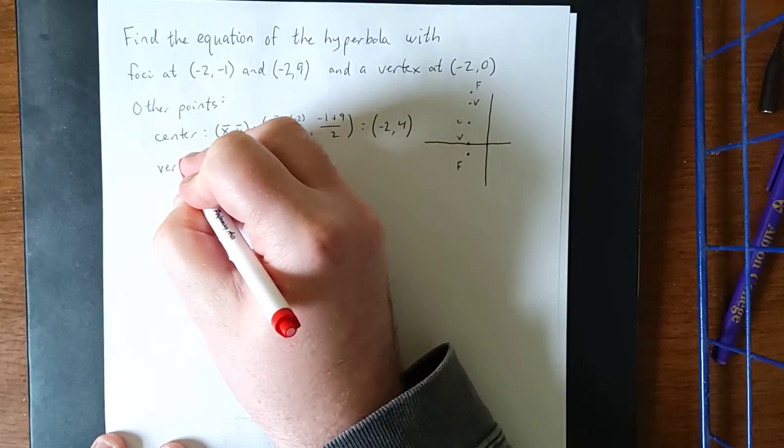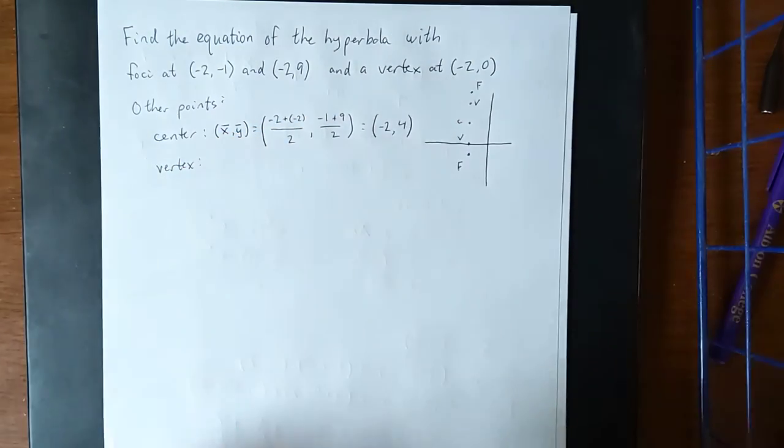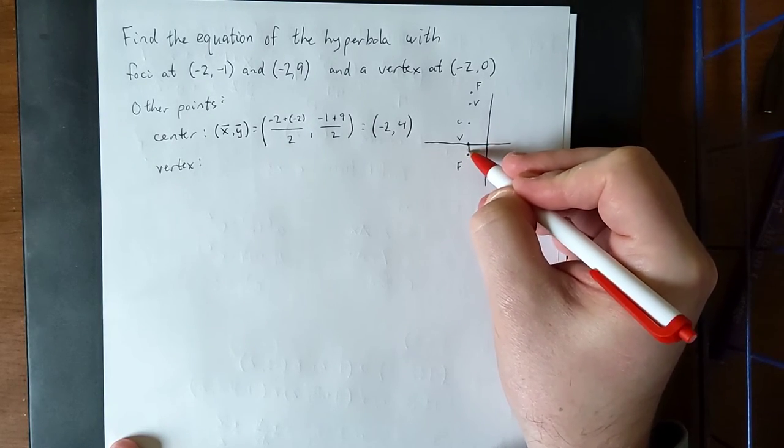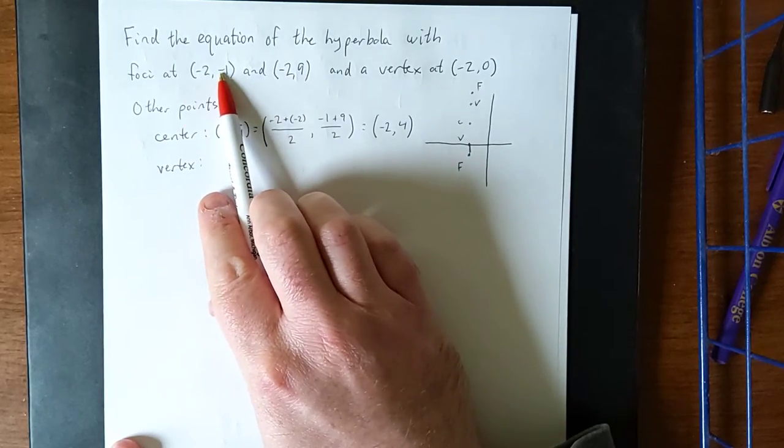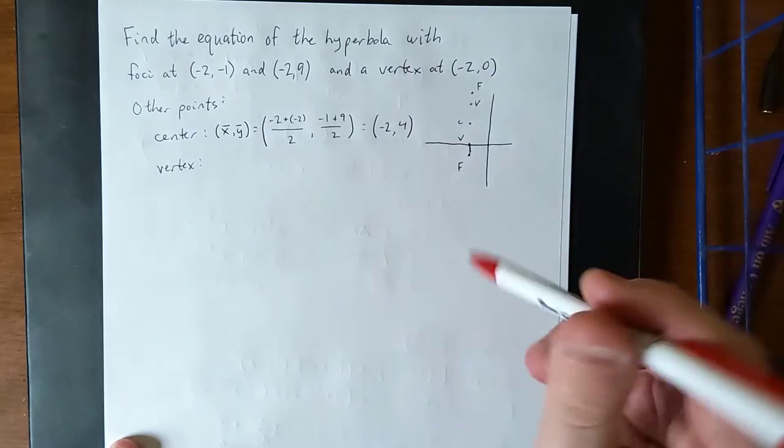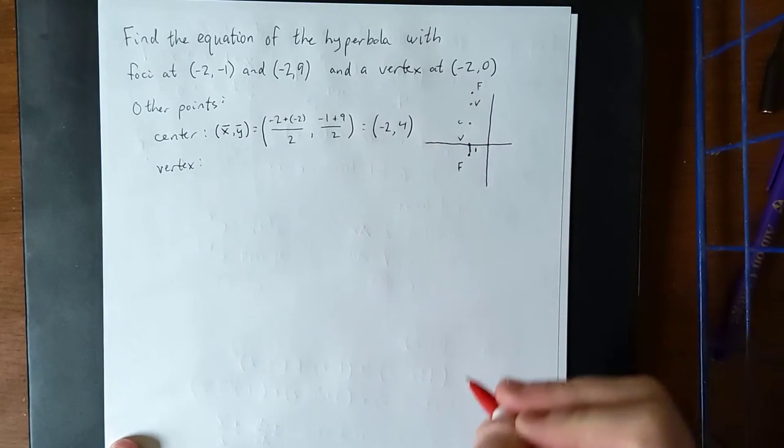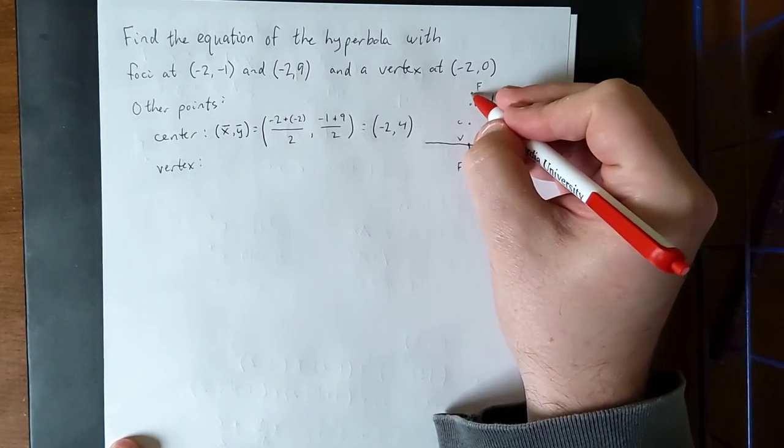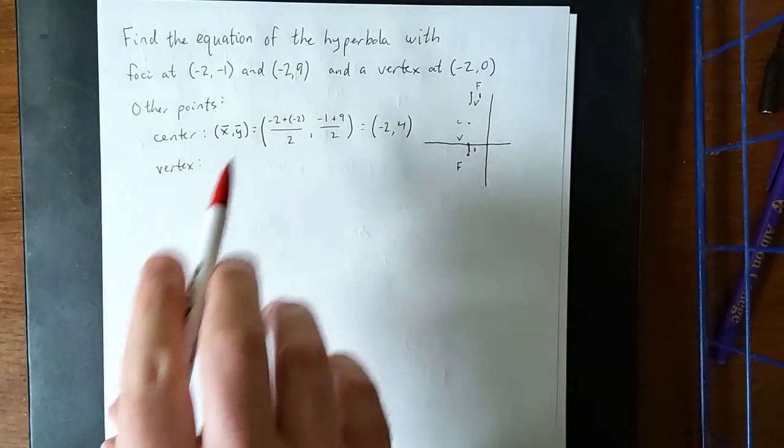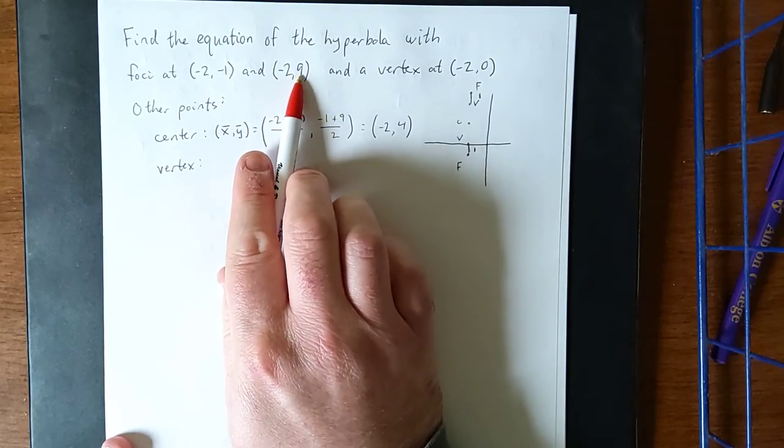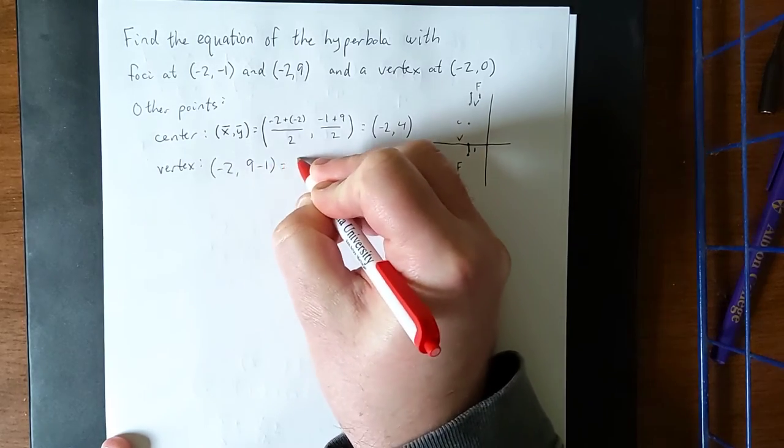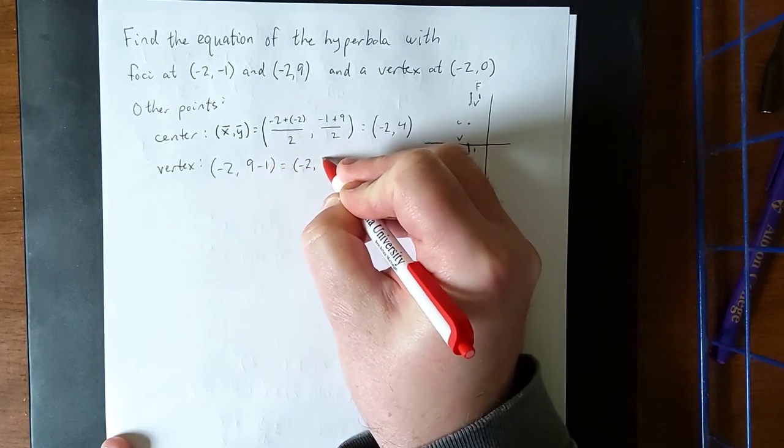As far as the other vertex is concerned, the piece of information that we're going to use is that the distance between this focus and this vertex was the same as the distance between (-2, -1) and (-2, 0). If we move the y coordinate up by 1, that lets us know that that distance is 1. Therefore, this distance is going to be 1 as well. So starting from that top focus we're going to move down 1 unit. Moving down 1 unit would put us at the ordered pair (-2, 8).